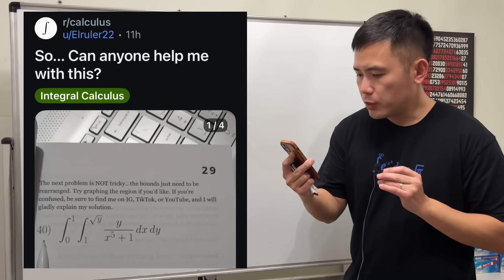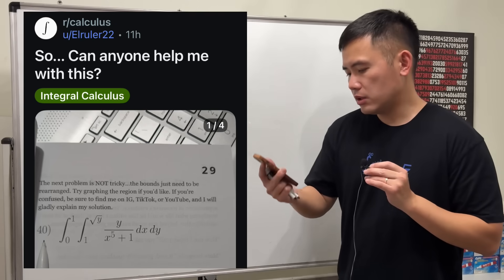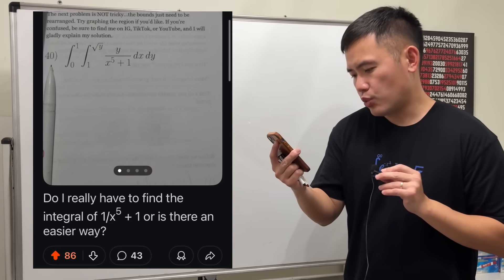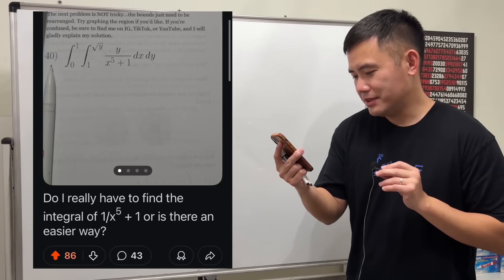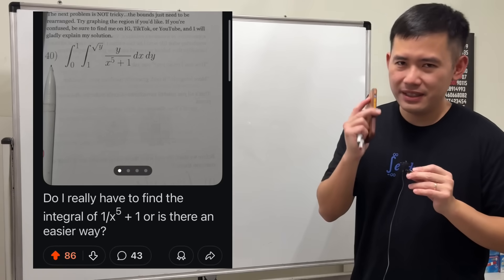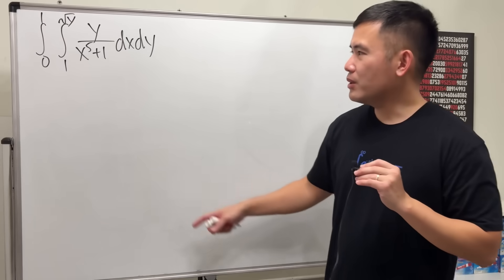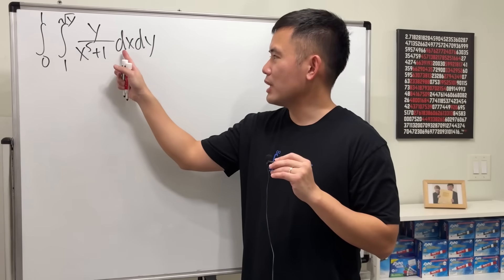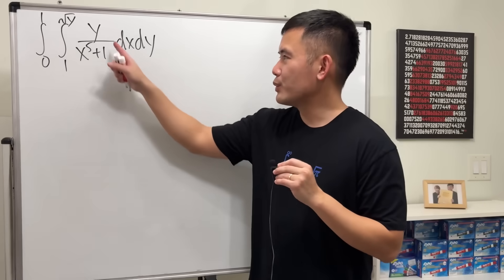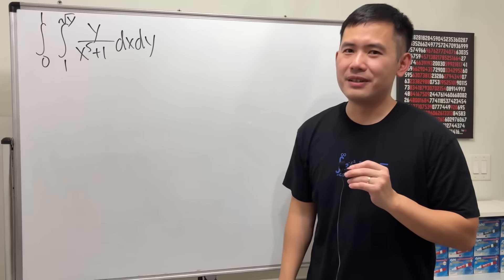Can anyone help me with this? Sure. Here we have this double integral, and it says: do I really have to find the integral of 1 over x to the 5th power plus 1, or is there an easier way? There is an easier way. Because right now, if you look at this integral, since we have the dx going first, we would really have to integrate a constant over x to the 5th power plus 1, which is not a good idea.